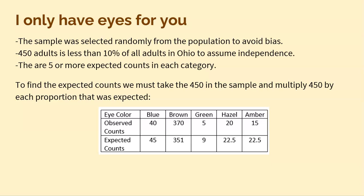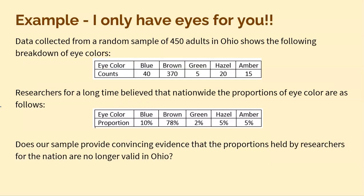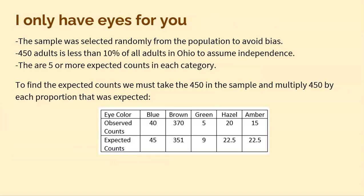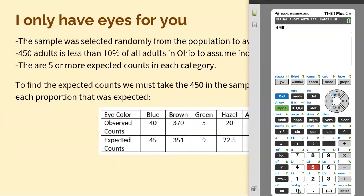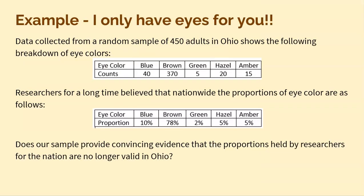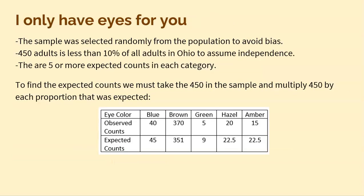We can't actually check that last condition until we go ahead and get our expected counts. We were told there were 450 total people in the sample, and we know, for example, that 10% were supposed to be blue. So we take 450 and multiply it by 10% to get the expected blue count — that's how I got 45. I did the same thing right down the line: 78% times 450, 2%, 5%, 5%, to get all the expected counts. And we know that all of those are five or more.